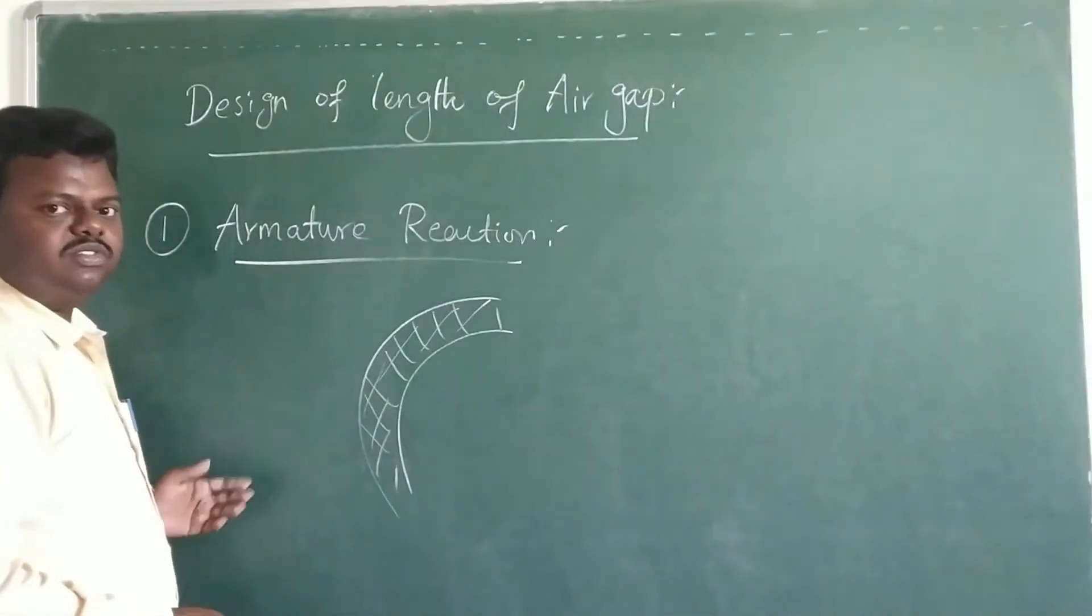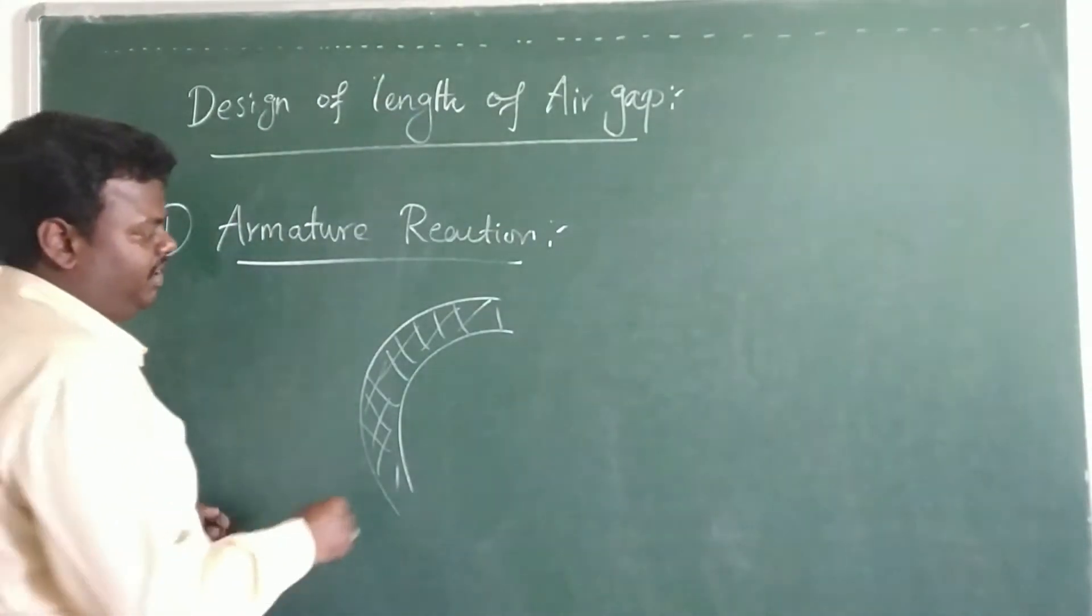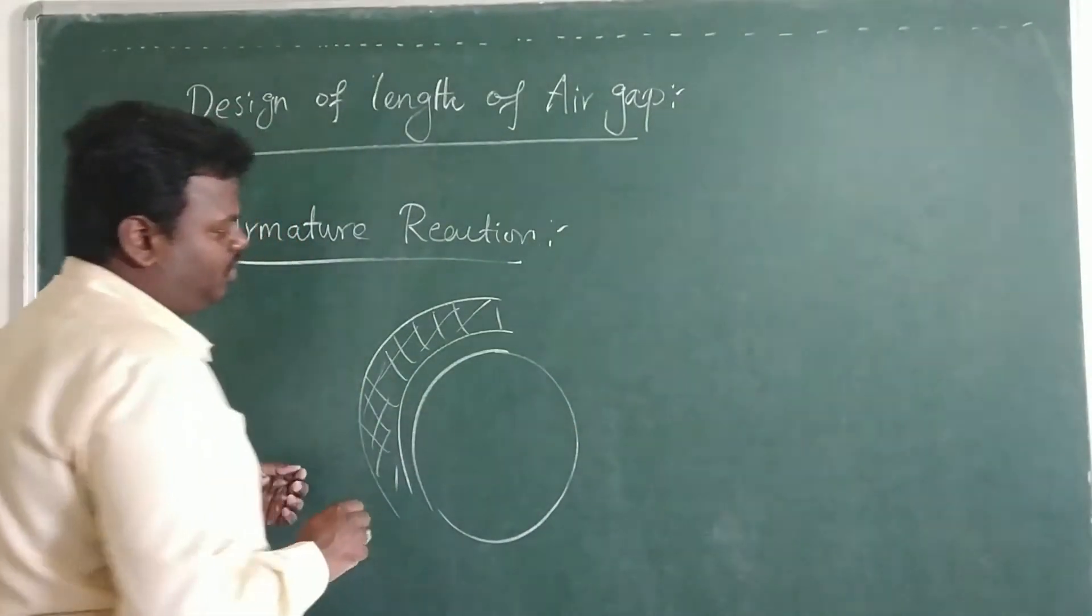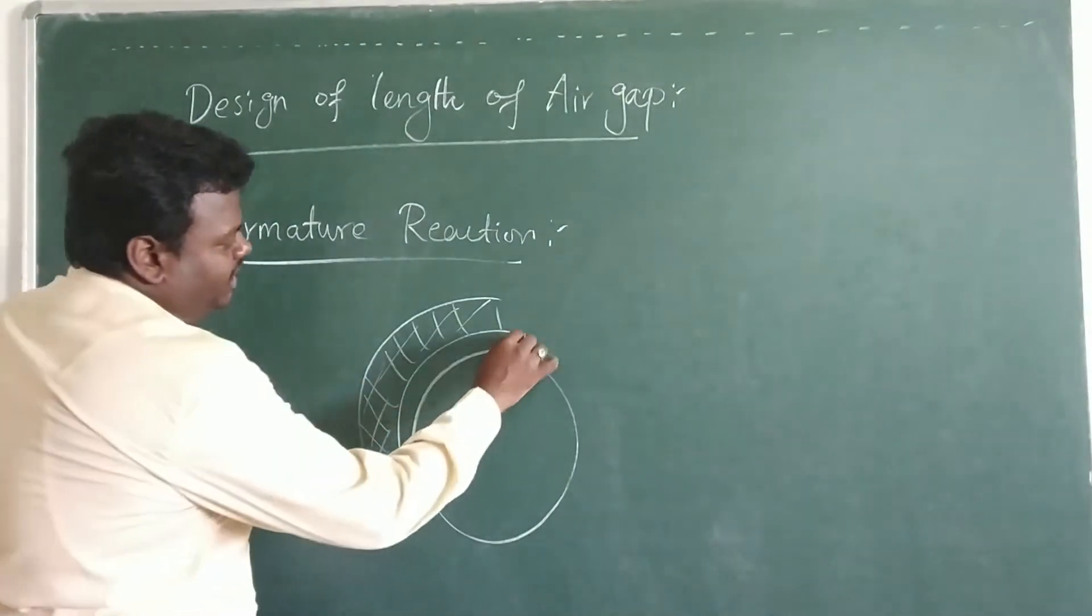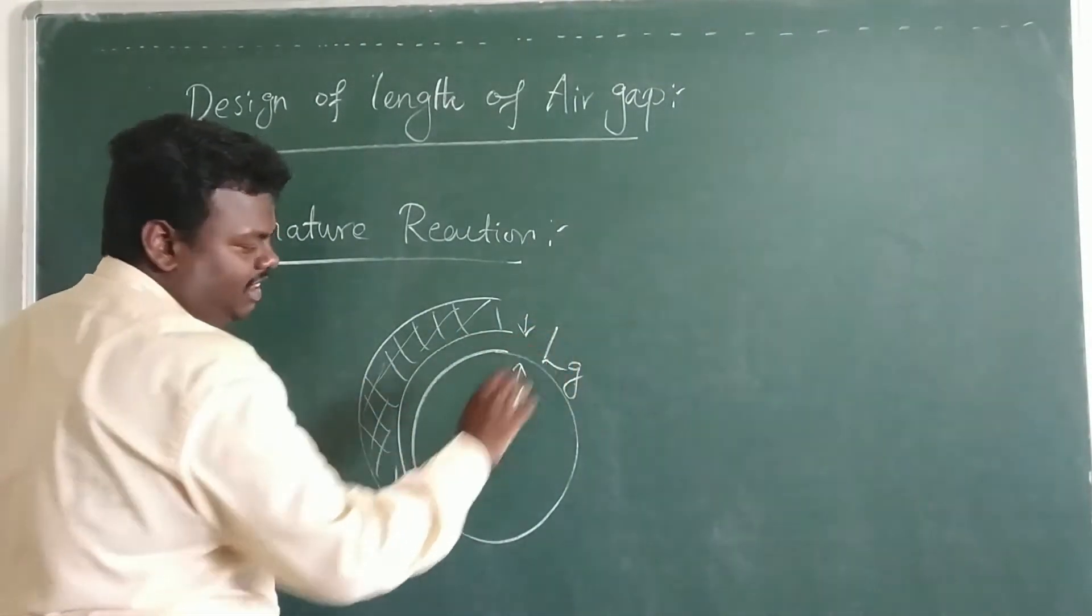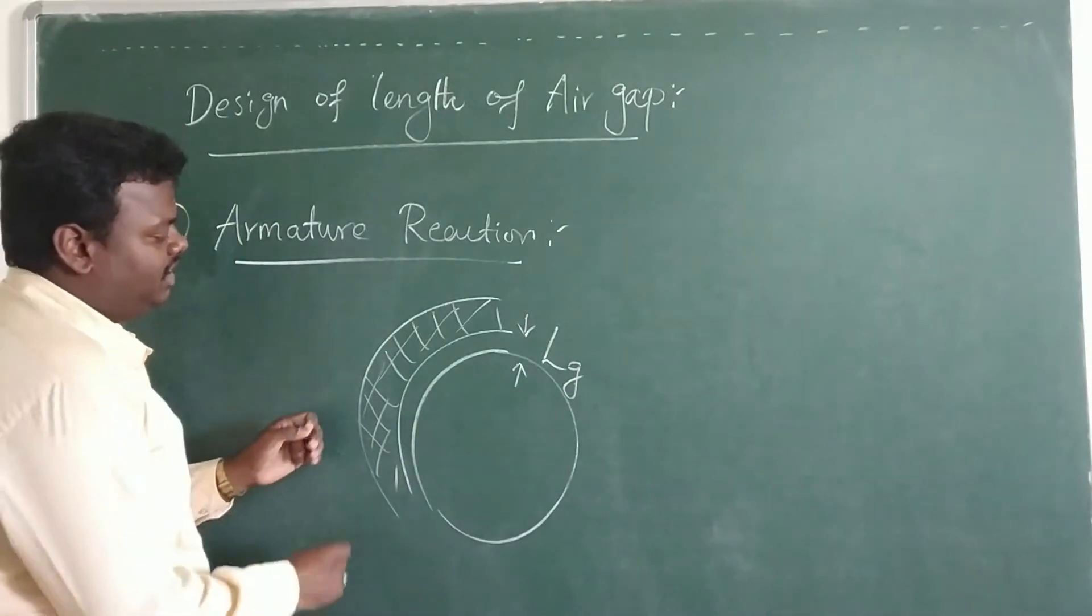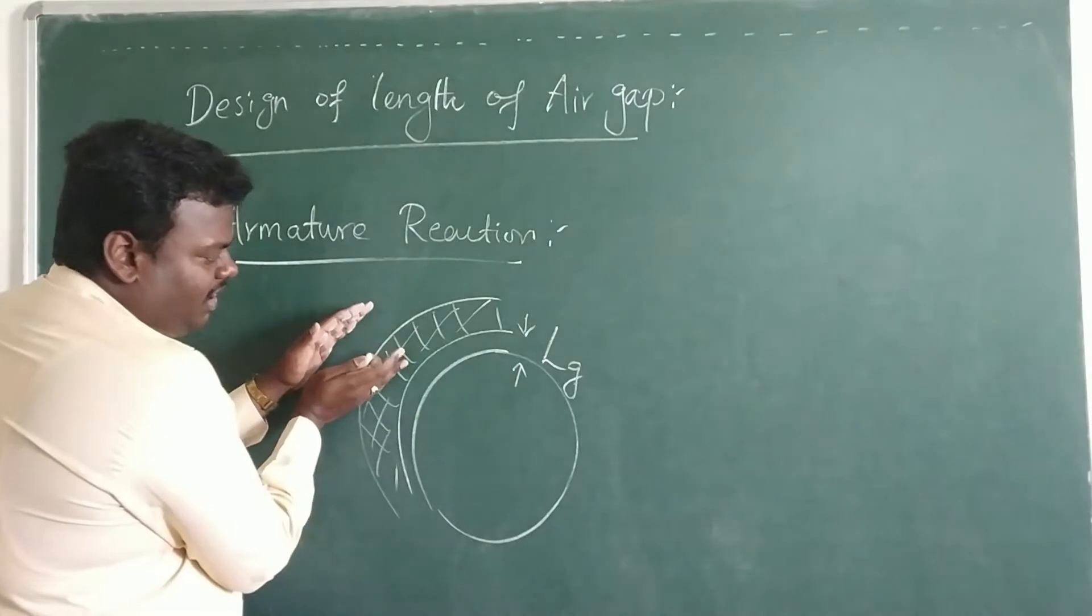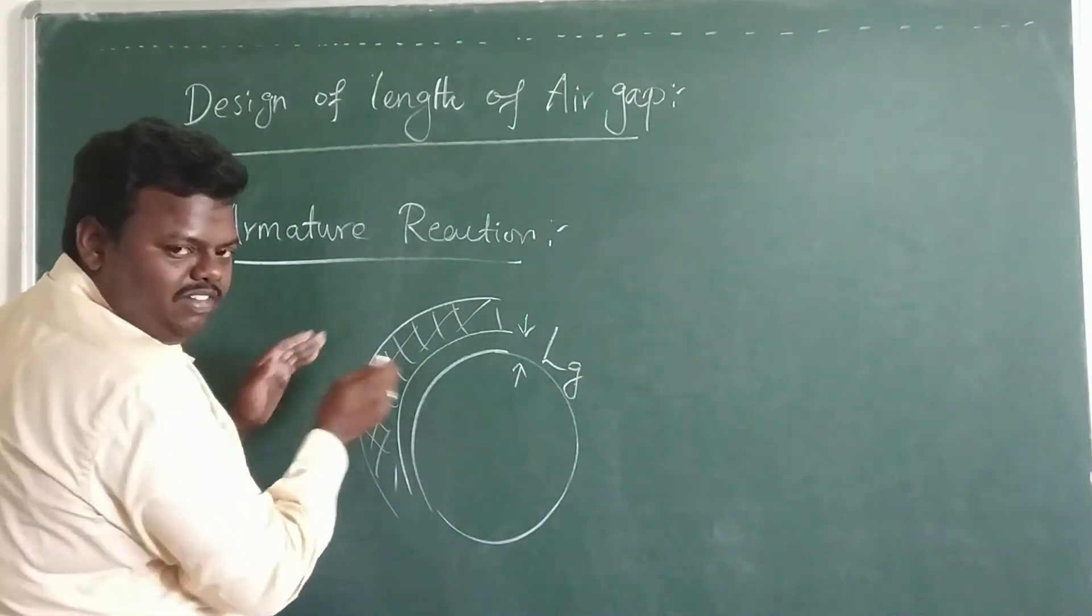This is the stationary portion, i.e. field production, whereas this portion is armature. So whenever we increase this particular air gap length LG, what actually happens is the effect of the armature flux over the main flux will get deviated.